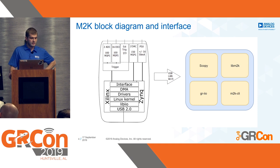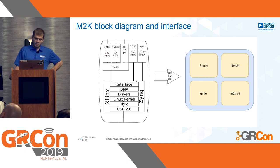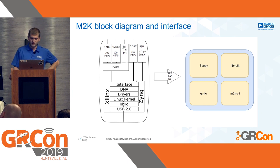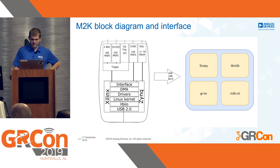Like I said, it's based on the same infrastructure as the Pluto — USB 2.0, LibIIO, Linux — but the analog front end is a little different. The M2K has a two-channel 100 mega samples per second ADC with an input range of plus/minus 20 volts, 16 digital input/output channels at 100 mega samples per second, a triggering mechanism supporting both internal and external triggering, a two-channel DAC synchronized at 150 mega samples per second, and a plus/minus 5 volt power supply.